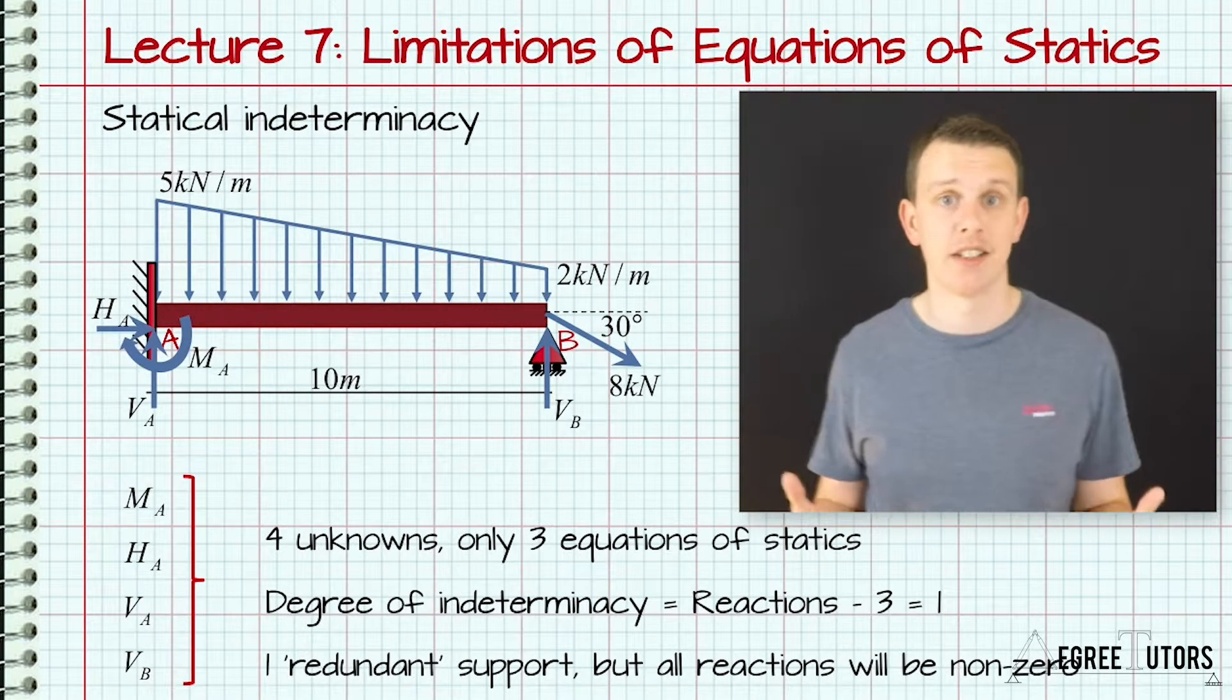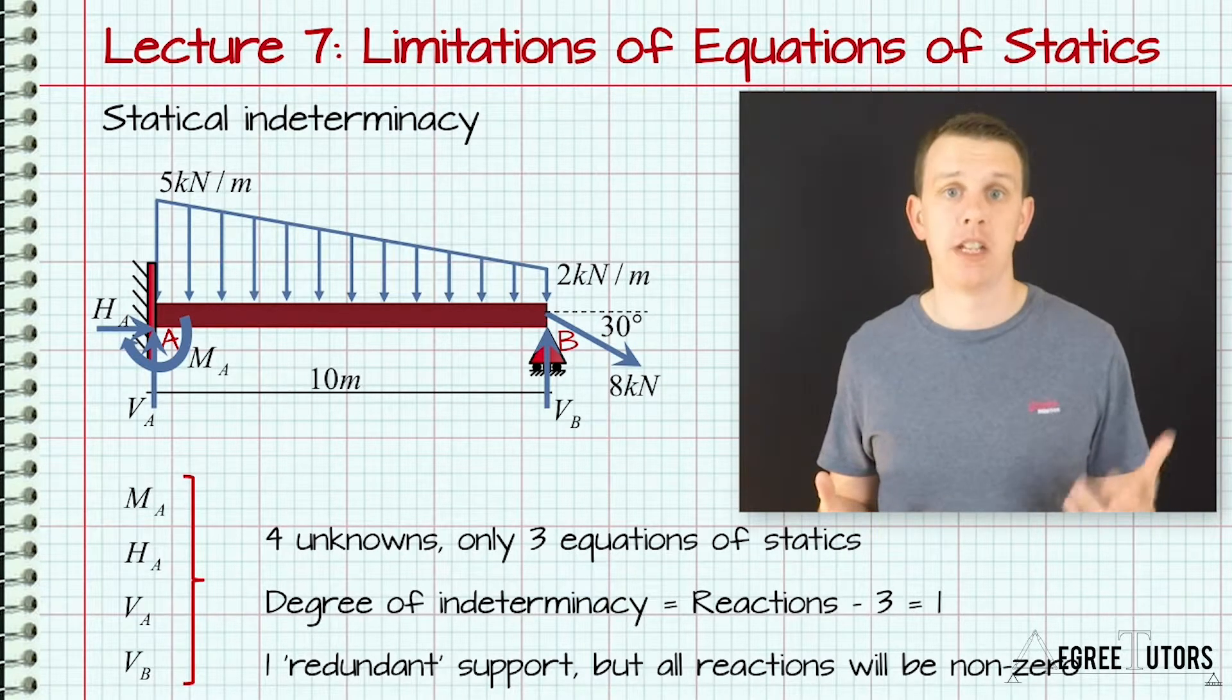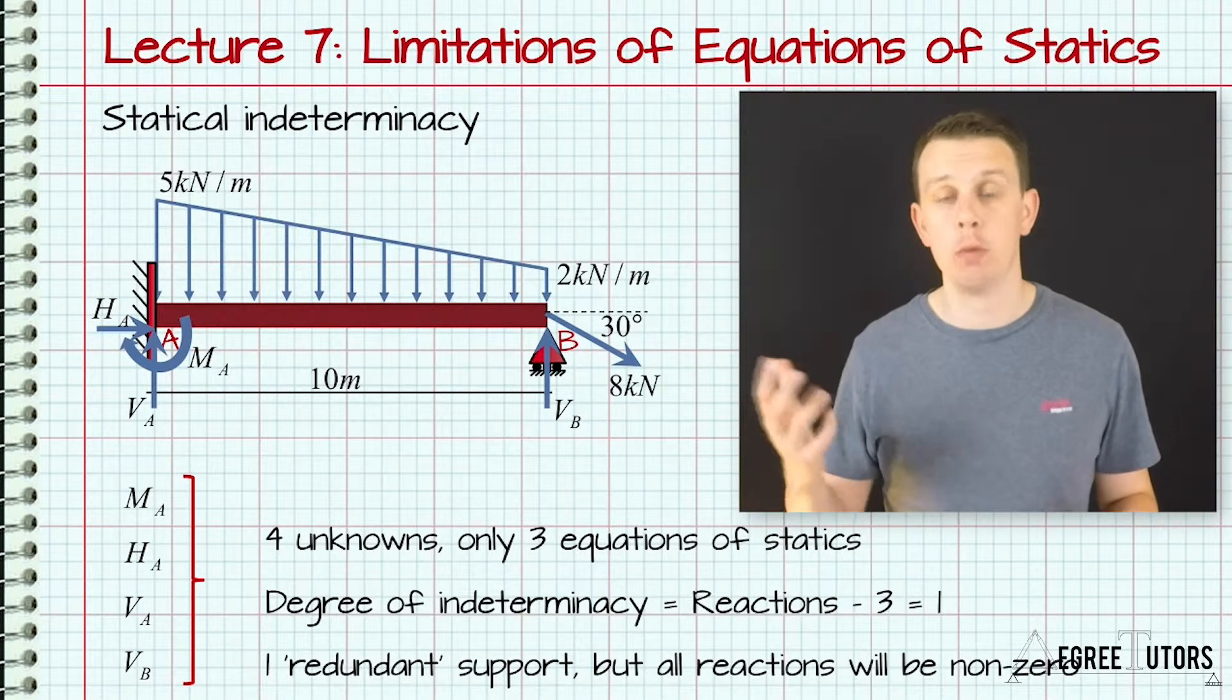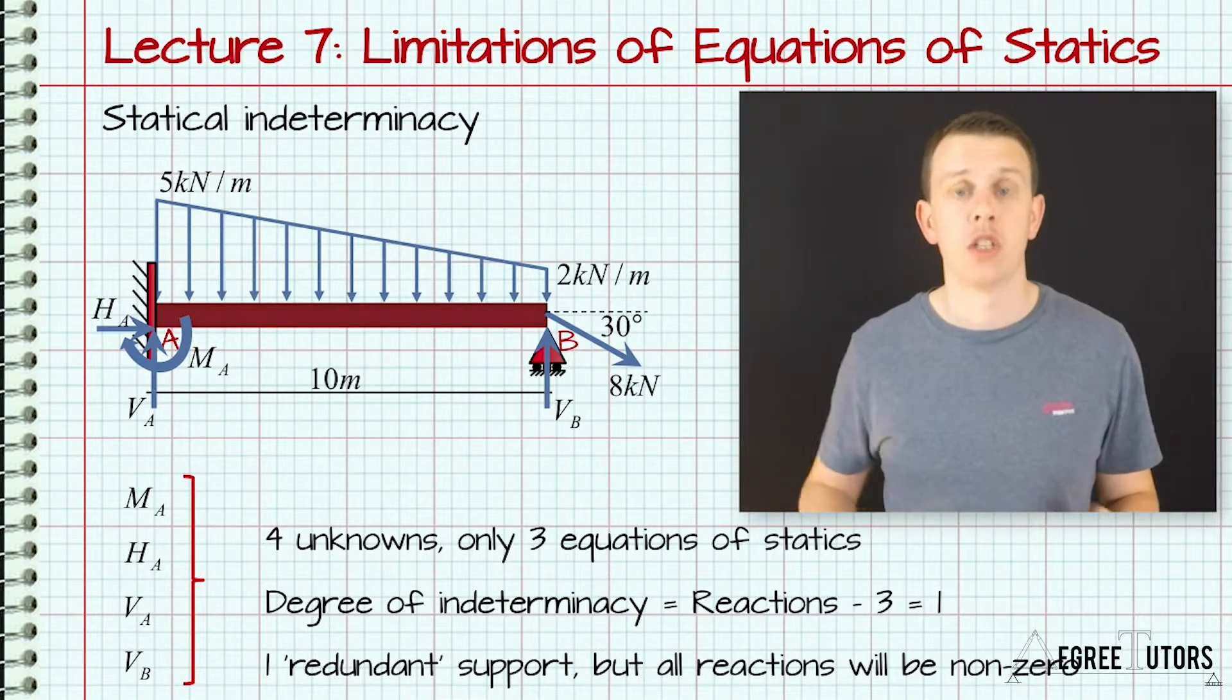Now the degree of indeterminacy is simply the number of reactions minus the number of equations. The number of equations of equilibrium in two dimensions is always three, so it's going to be the number of reactions minus three that gives you your degree of indeterminacy.